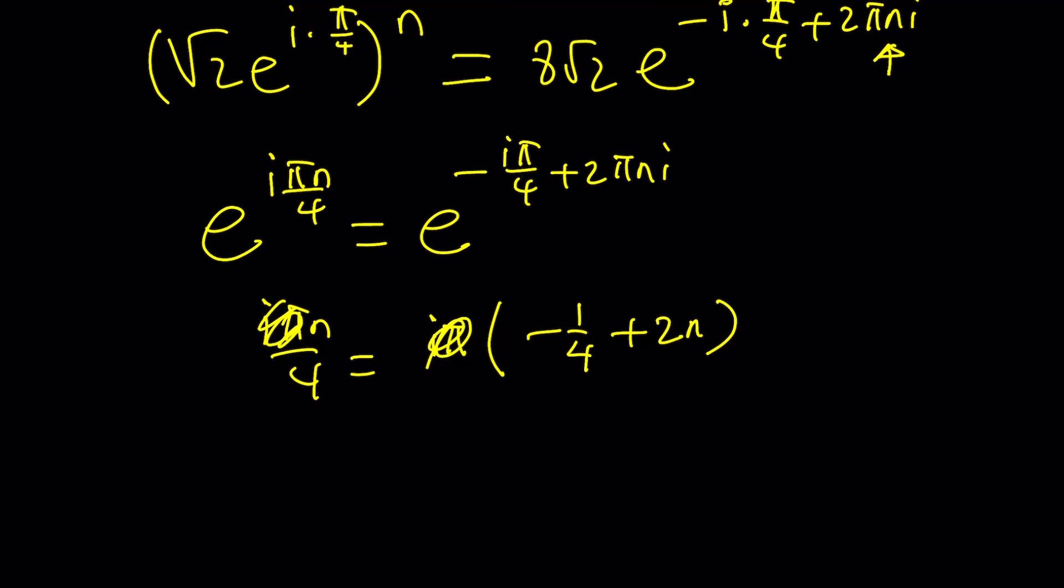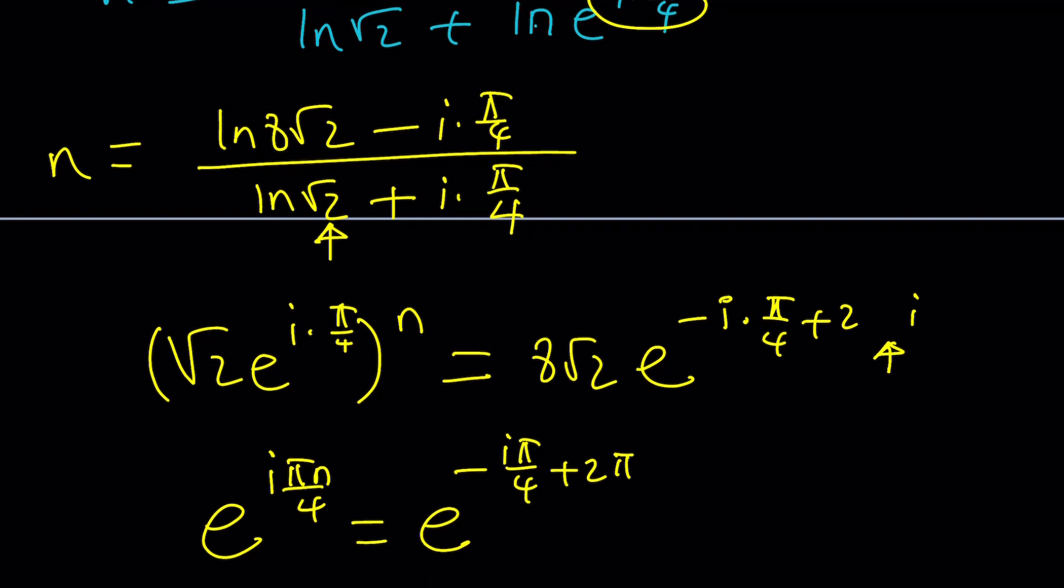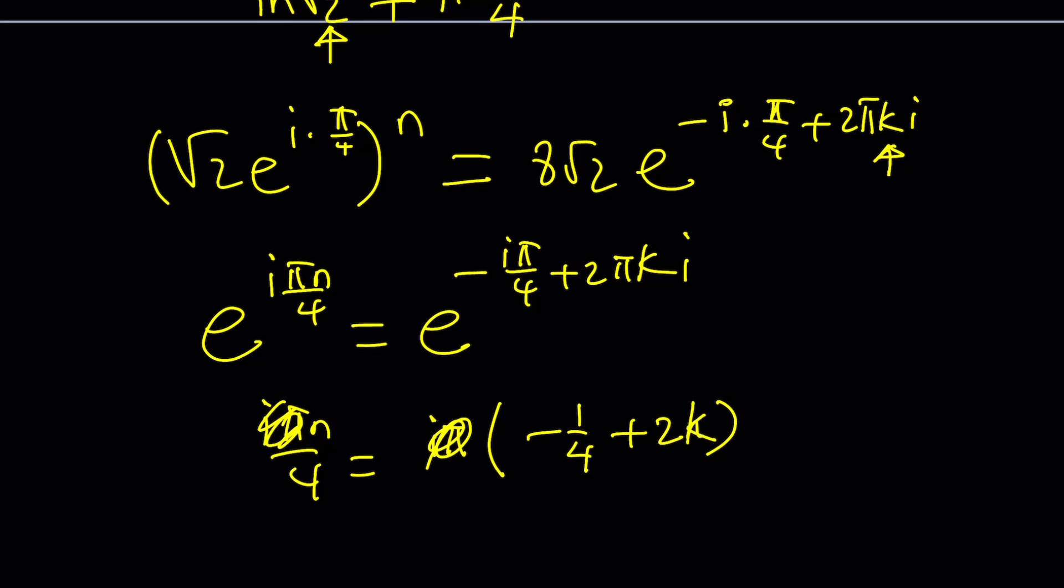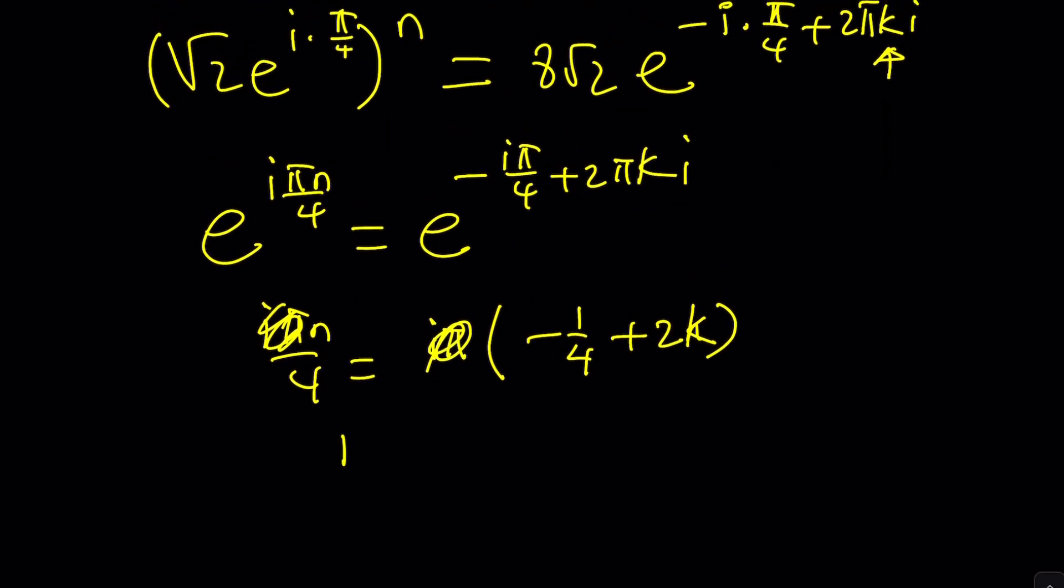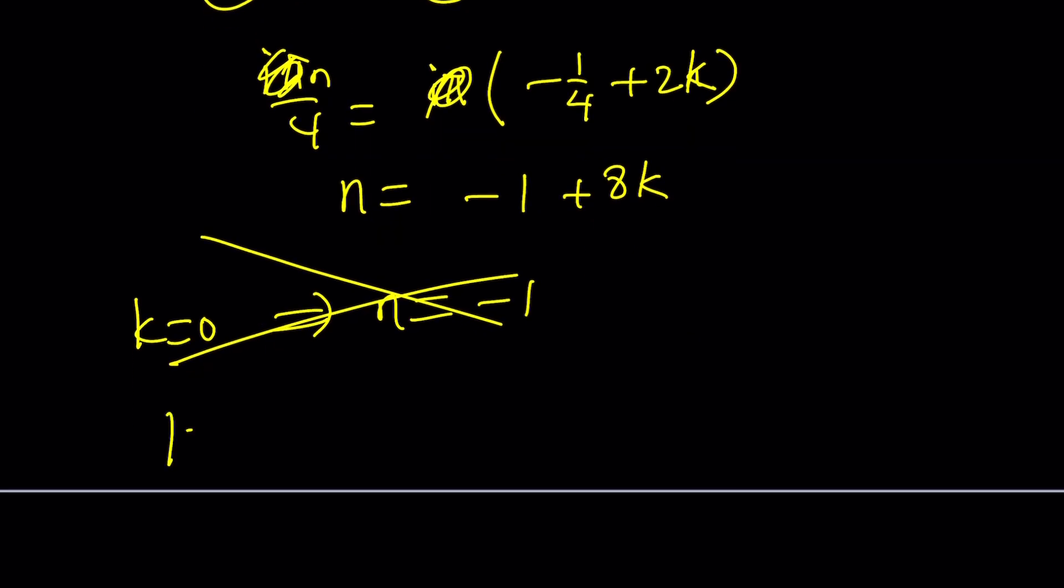And, oops, I was supposed to write k and I kept writing n. I don't know why. I was supposed to write k there. 2πki. This is 2πki. And this is 2k. Okay. And then, now we get something like n equals -1 + 8k. If k is equal to 0, we get n equals negative 1. As you know, that's not valid. But if k is equal to 1, then n equals 7. And that should be valid.